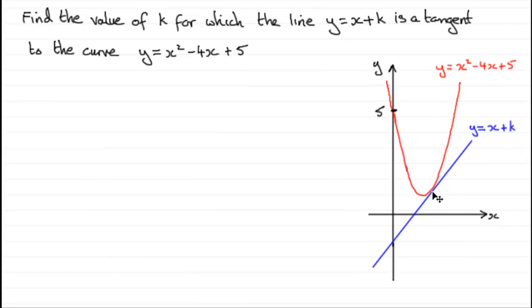There would be one root to our equation. Unlike this one with two roots, or down here with no roots. So for a line to be a tangent to the curve here, there's just got to be one root in our solution.